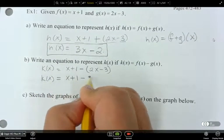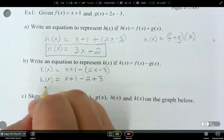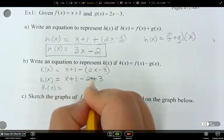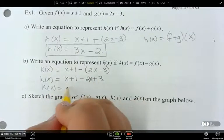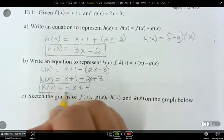We subtract, not just subtracting some of it and adding some of it. So be careful with that. So switch all the signs after the bracket, and then combine like terms. So k of x is equal to, I should have an x there, negative x plus 4. So that's k of x.